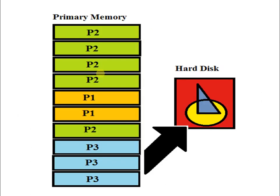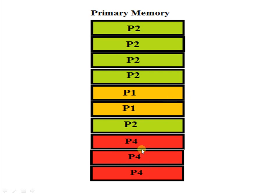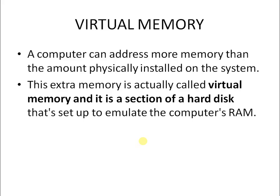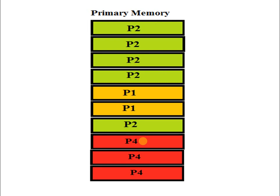P3 is now going to be temporarily shifted to the hard disk because P4 needs to be executed immediately and requires primary memory. P3 moves to hard disk — which is the virtual memory — freeing up space. Now P4 has occupied the memory space left by P3, and P1, P2, and P4 are executing in primary memory. When P3, which was shifted to the hard disk, needs to be moved back to primary memory to execute again, that process is known as thrashing.